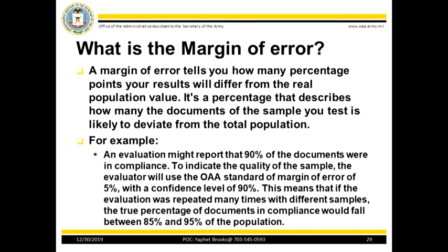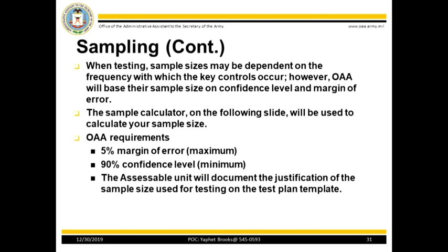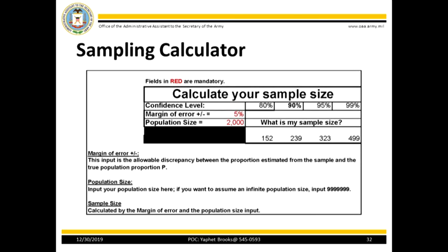When we need to infer something about a larger population and have only a sample to work with, our statistic will be a guess and that guess will contain some degree of potential error. After you choose your sampling technique, document the sample in the testing plan template, DA Form 11-2, and the Internal Control Appendix B. OAA requirements are consistent with audit standards: OAA requirements are 5% margin of error and 90% confidence level. You will receive an editable sample calculator with a hard copy of this presentation. This Excel calculator meets the sampling requirements from ASA-FMMC.